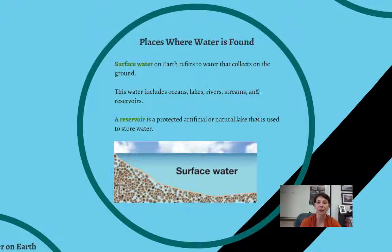So we have surface water. That's water that collects on the ground. So that's oceans, lakes, rivers, streams, and reservoirs. A reservoir, again, is a protected, artificial, or natural lake that's used to store water. So surface water occurs at the surface.